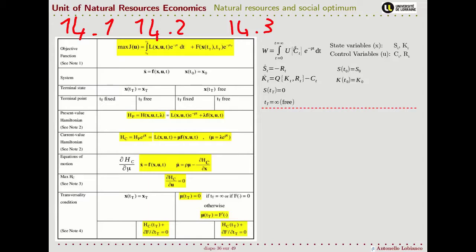In our case, utility depends on consumption, and because consumption depends on t, utility also depends on t — but only through that link. The way utility depends on consumption in our model is fixed. So actually in our case we don't have a direct dependence on t, and the objective function does not depend directly on the state variables — in our case it will depend only on the control variables.